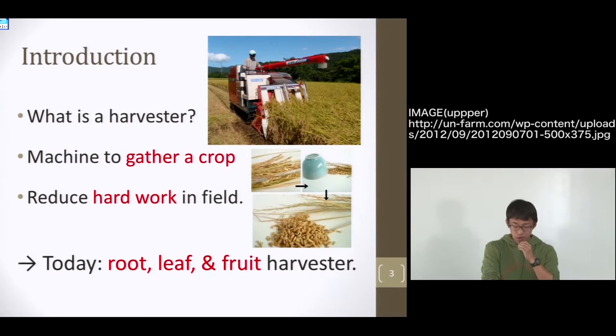Do you know and have you seen before a crop harvester? The machine's role is to scatter crops and reduce farmers' hard work in fields. This is one of the famous machines in Japan. It harvests rice and separates seeds from the straw.